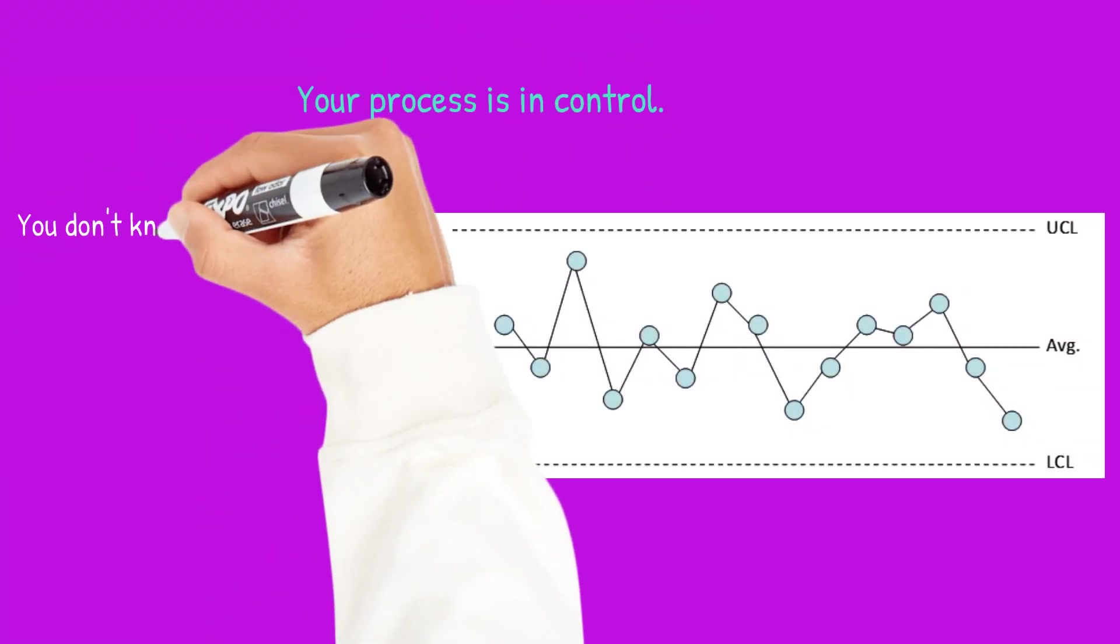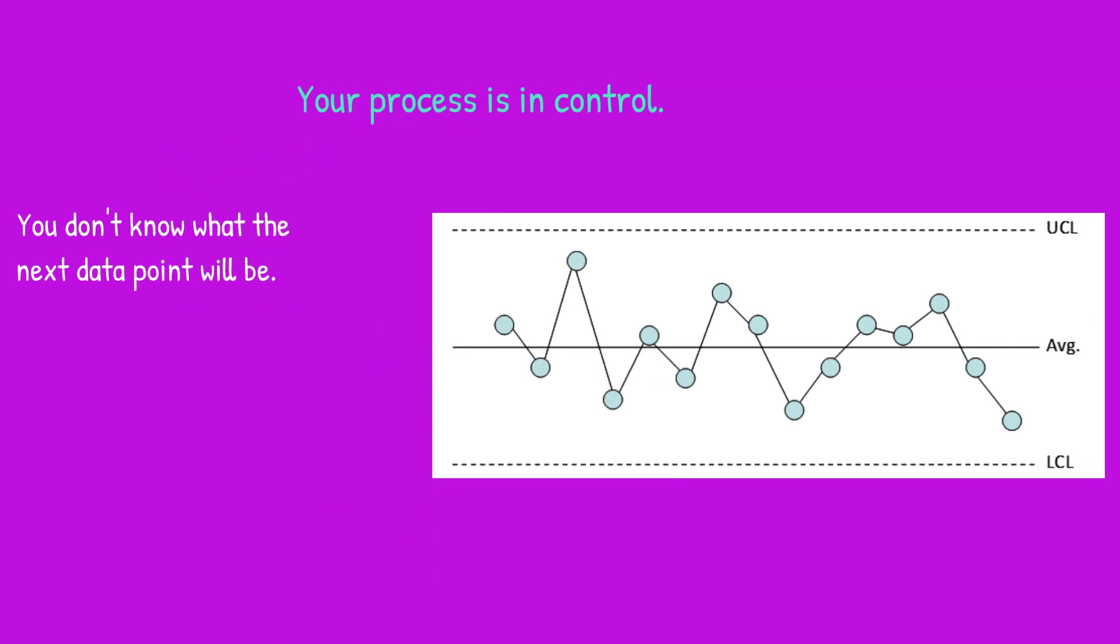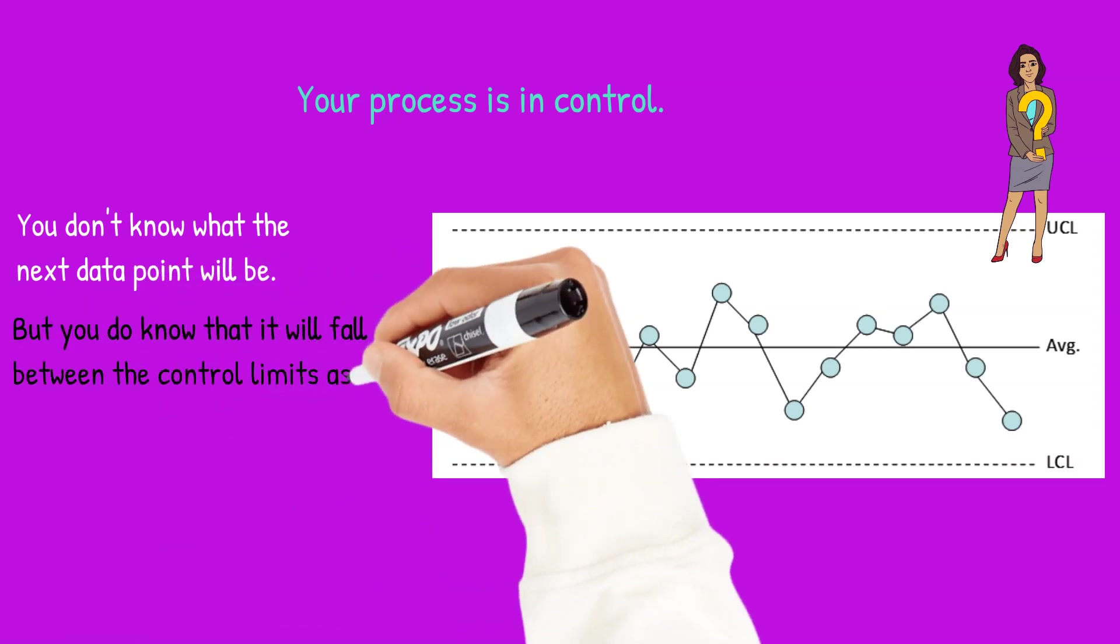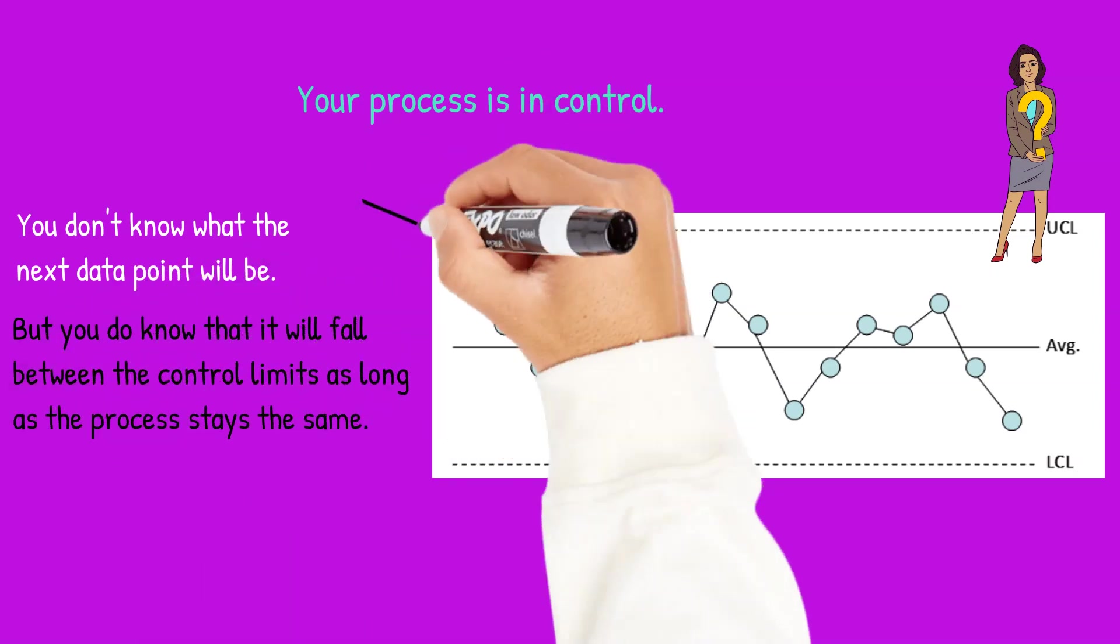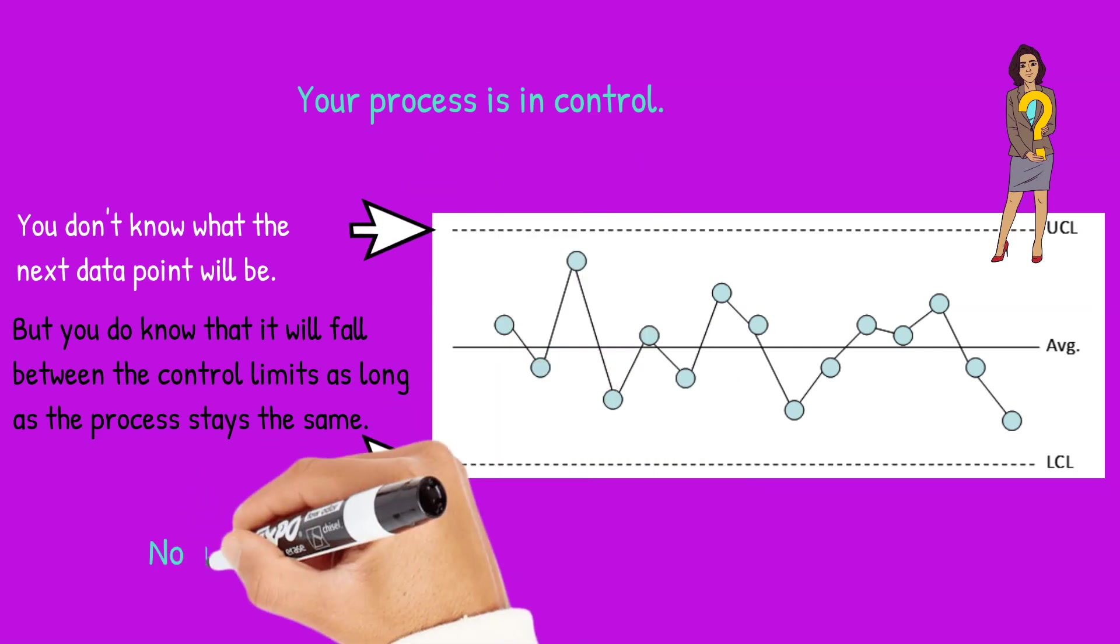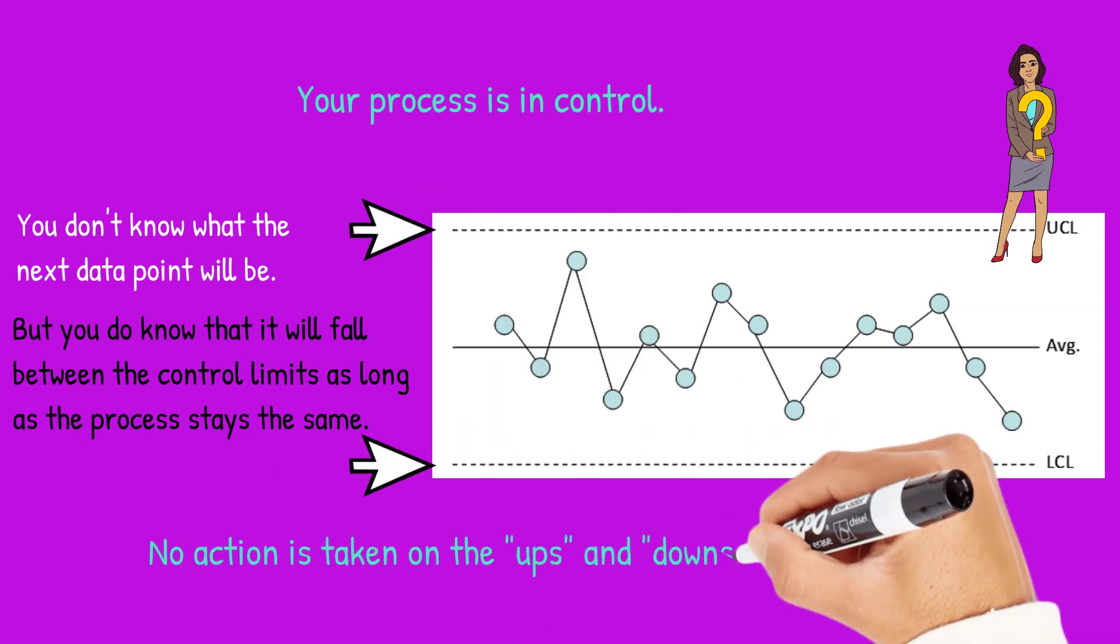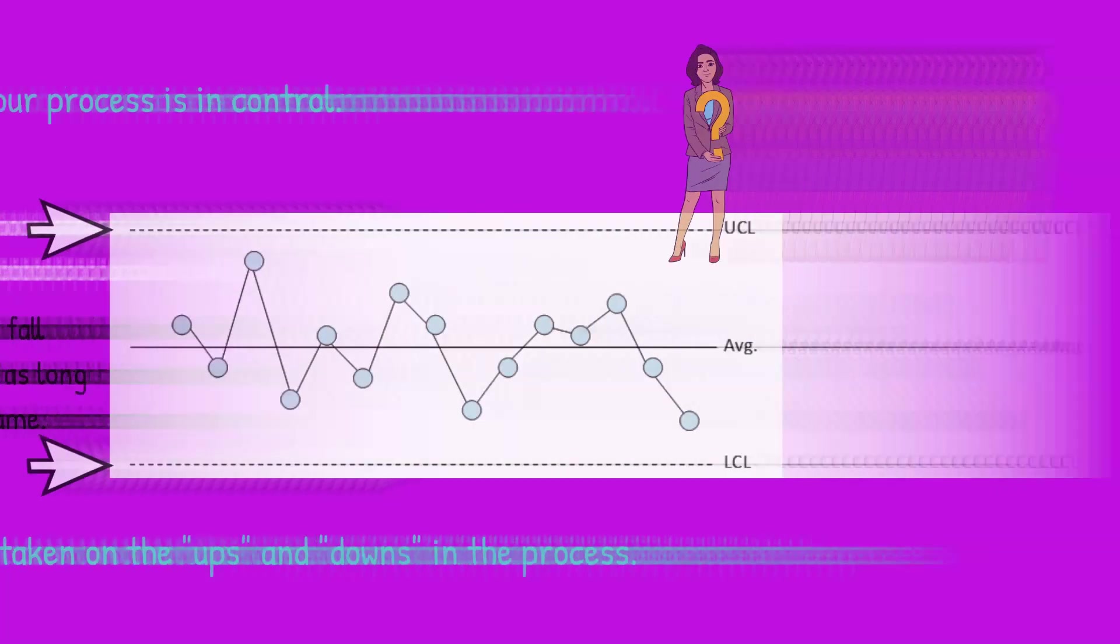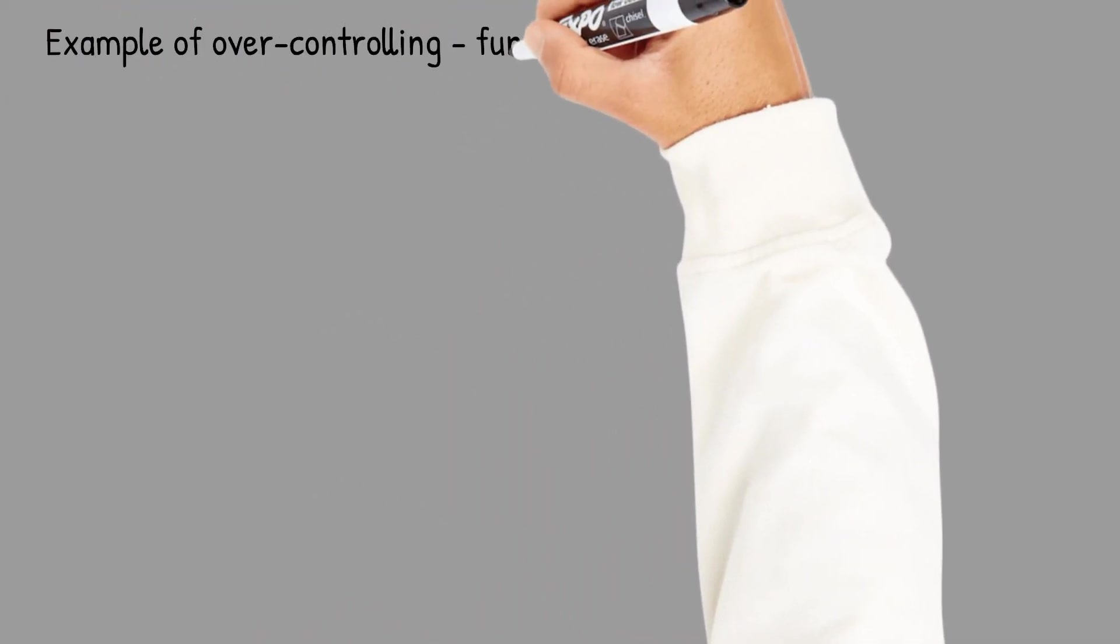Just to review, your process is in control. You don't know what the next data point is going to be, but you know because it's in control, it's going to be some place between that upper control limit and the lower control limit as long as the process stays the same. This is an in control process and you do not take action on the ups and downs in the process or as you will see you're going to increase variation.